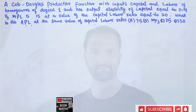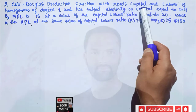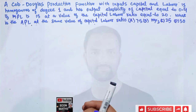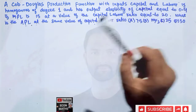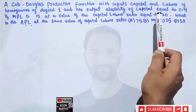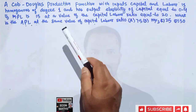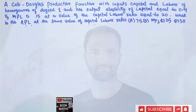Hi, this is Halal. In this video on the mathematical economics series, we will try to solve a problem on the Cobb-Douglas production function. We have to find the average productivity of labor. The question is: a Cobb-Douglas production function with inputs capital and labor is homogeneous of degree one, with output elasticity of capital equal to 0.4. If the marginal product of labor is 15 at a capital-labor ratio of 20, find the average product of labor at the same capital-labor ratio. The options are 7.5, 500/3, 20, or 50.